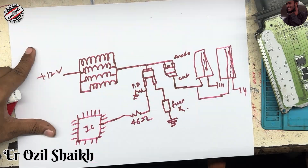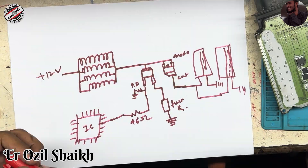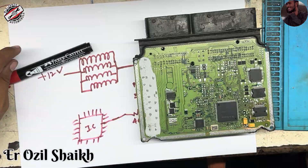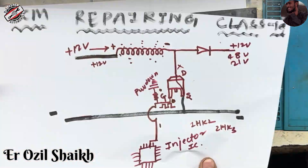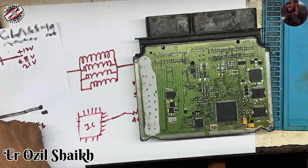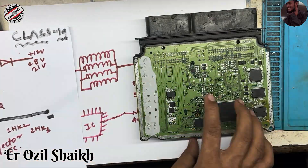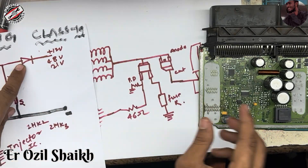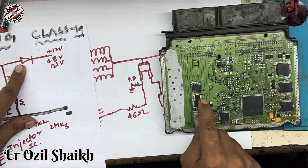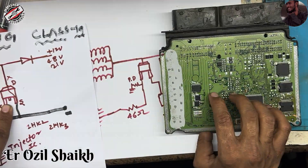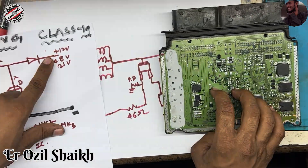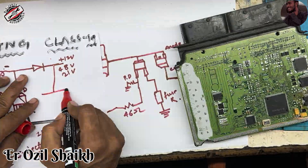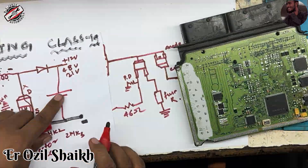This is very important and simple to understand. In this ECM diagram we have the coil, the MOSFET, and the diode. Here is the MOSFET and here is the diode. A capacitor can also be drawn here to complete the circuit. From here you can get the high voltage output.